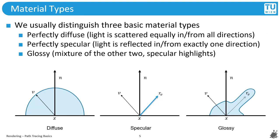We generally distinguish three different types of materials — note that this is a widely accepted convention to categorize materials by their appearance. Materials that more or less evenly scatter incoming light in all possible directions are referred to as diffuse. A perfectly diffuse BRDF is uniform for all possible pairs of incoming and outgoing directions. Materials that reflect light only in a very small range of directions — that is, they mostly mirror light — are referred to as specular. A perfect mirror reflects any incoming light only in the mirror direction.